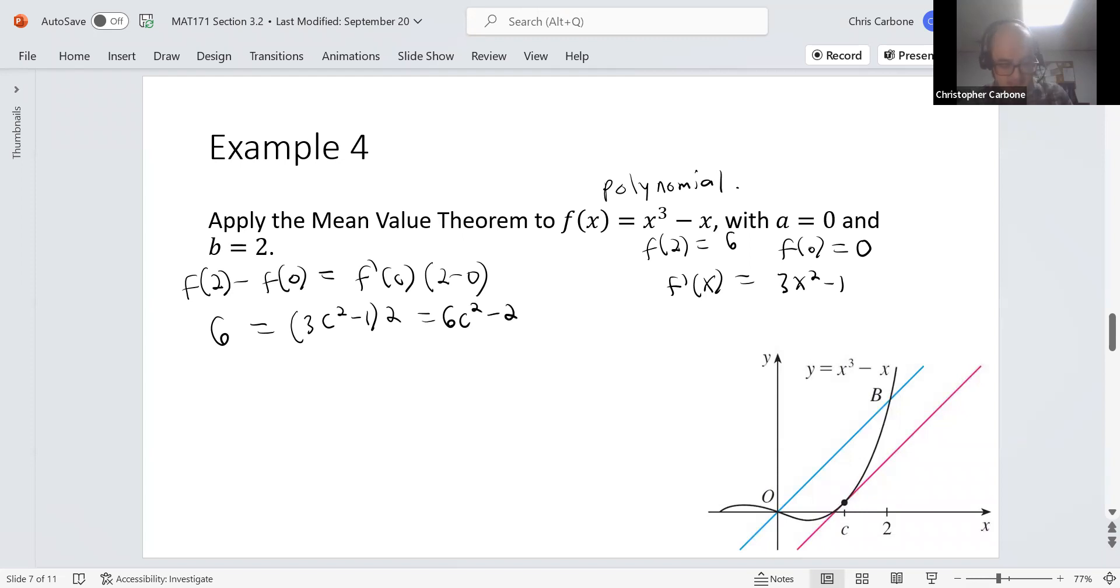Solving for c, we get c² = 4/3, which means that c = ±2/√3.